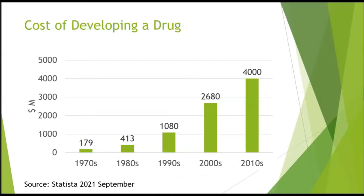The cost of developing a drug increases exponentially — it doubles every 10 years. The cost of a new drug over the last 10 years is estimated on average at $4 billion, especially for biodrugs such as monoclonal antibodies, diagnostic products, and vaccines.